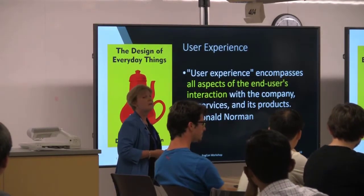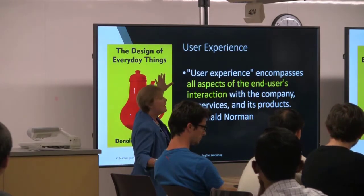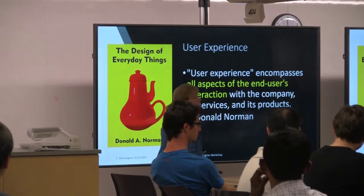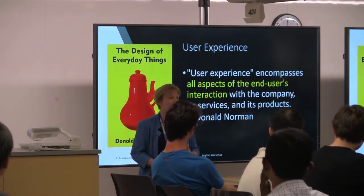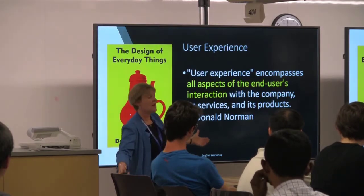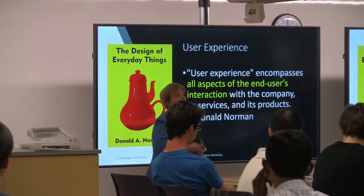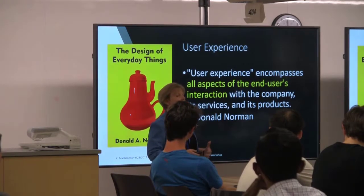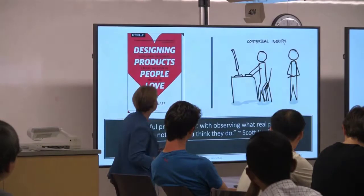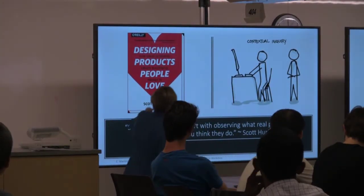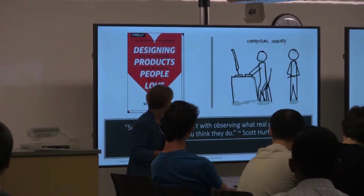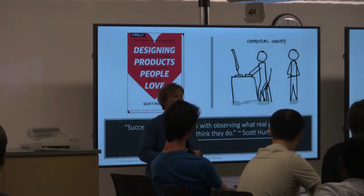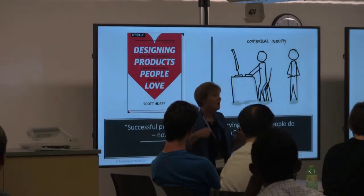Something like a motorcycle has a lot of interaction points — potential interactions with pedestrians, with other vehicles, with licensing, and all those kinds of things. The better pitches, the better products — even if they haven't fully mastered this, they're at least thinking about it. There's another book I like by Scott Hurff called 'Designing Products People Love,' and a successful product starts with observing what real people do, not what you think they do. How many have gone out and already talked to stakeholders?